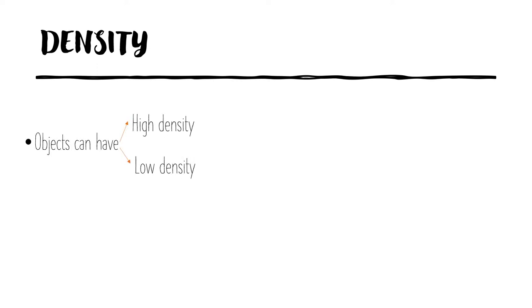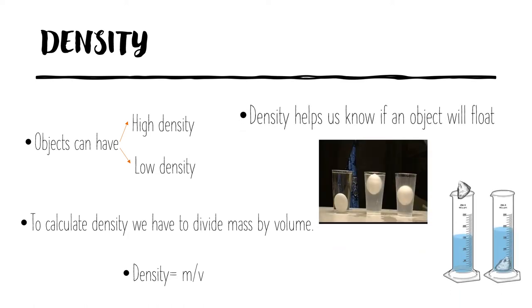Density helps us measure objects and they can have high density or low density. To calculate density we have to divide mass by volume, and density helps us know as well if an object will float.